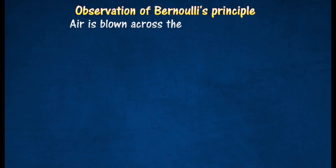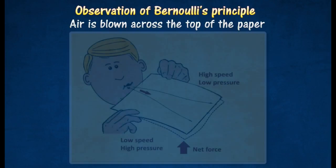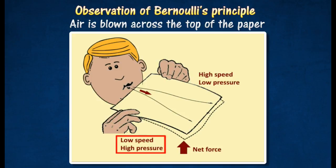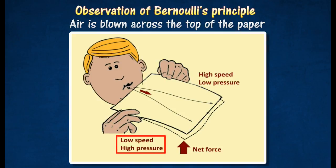When air is blown across the top of a sheet of paper, the free end of the paper is seen to rise. The flow of air at high speed creates a region of low pressure across the top of the paper. The air beneath the paper is at a higher pressure, and a net upward force lifts the paper.